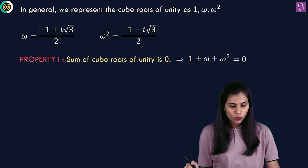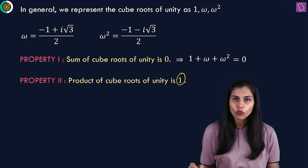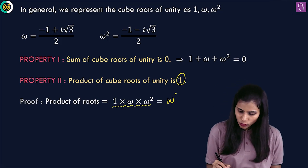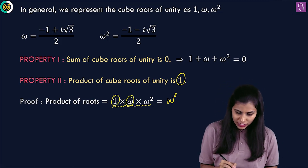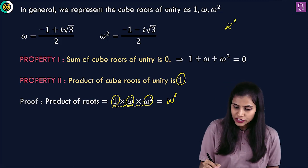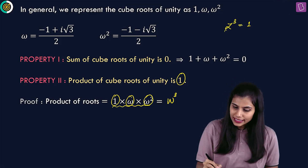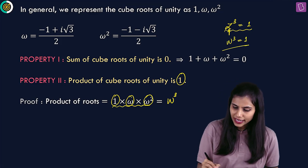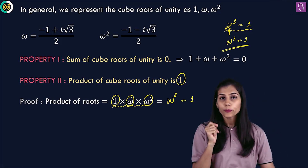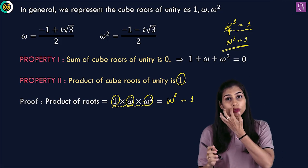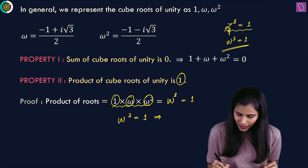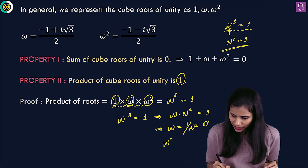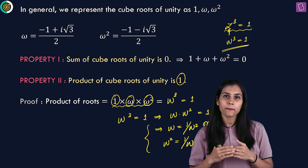The next property says the product of cube roots of unity equals 1. Multiplying: 1 times omega times omega squared gives omega cubed. Since omega is a root of z cubed equals 1, omega cubed equals 1. Hence proved — product of cube roots of unity is 1. From this, we can deduce that omega cubed equals omega times omega squared equals 1, so omega equals 1 by omega squared, and omega squared equals 1 by omega.